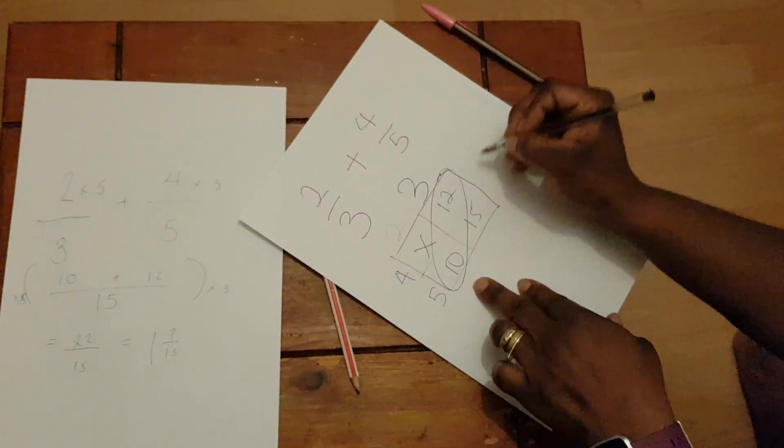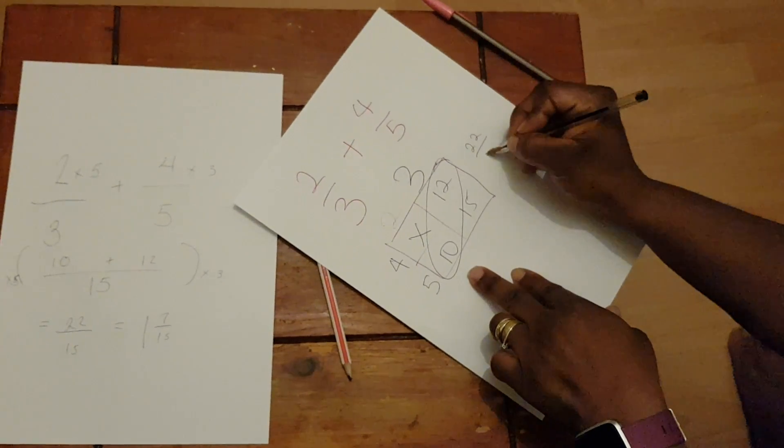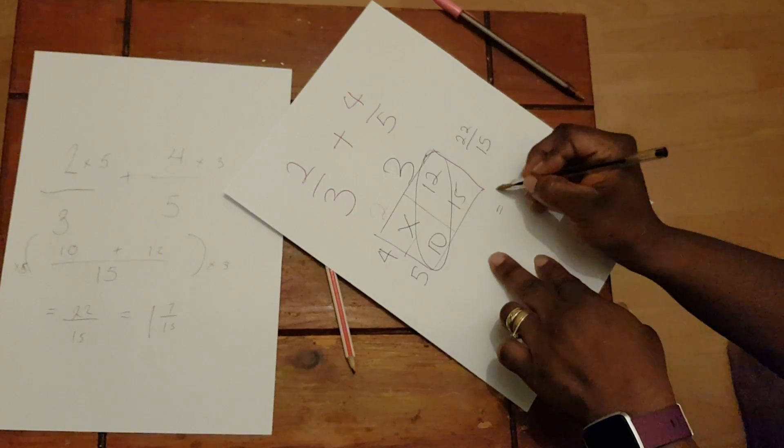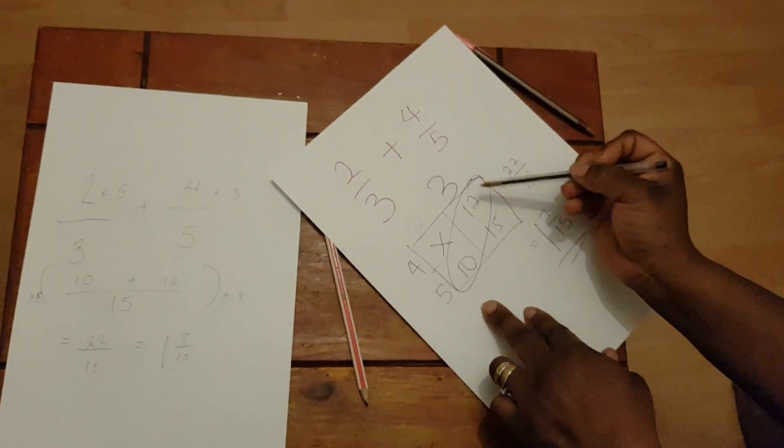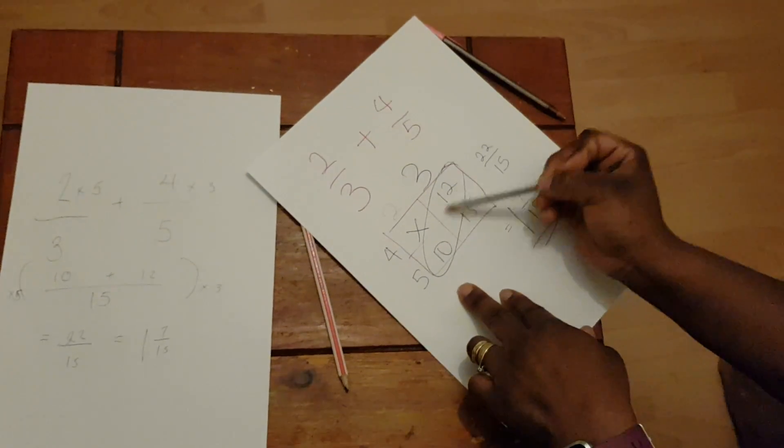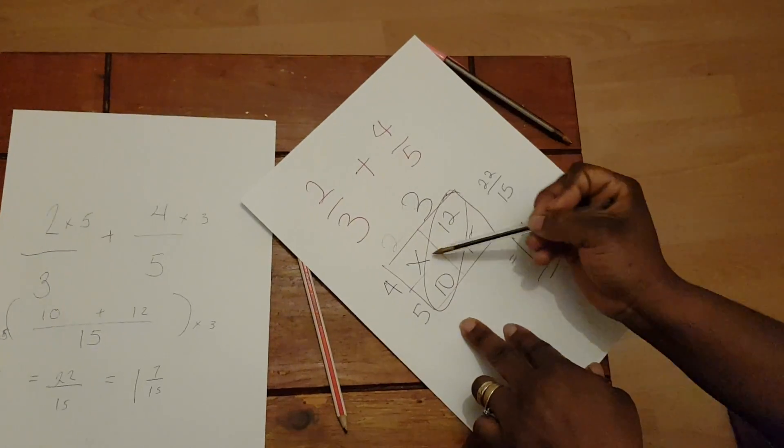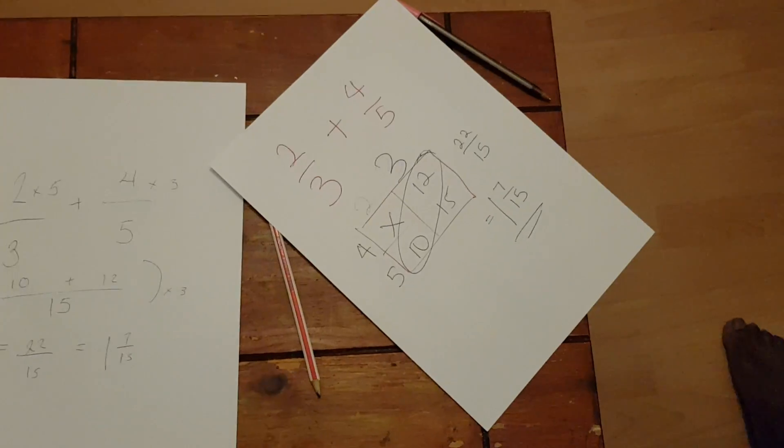Because there's an add there, so 12 add 10 is 22. We actually got the same answer, you know. But I prefer this method because all you have to do, if it was a minus, then you take the small one away from the big one. You see? Yours is quicker. Yeah.